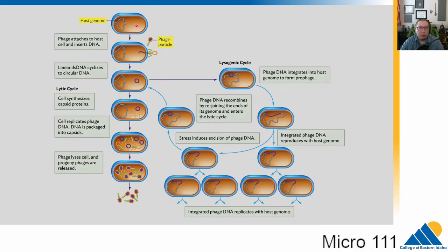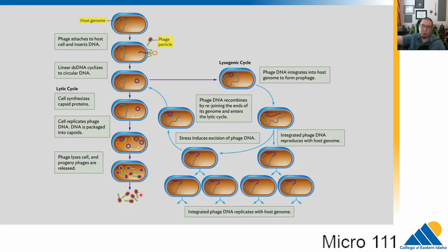Here's the host cell — it's a bacteria, here's its genome. A phage comes along and lands on the host cell. It can inject its genome in, and then this DNA can do one of two things. In the simplest phase, it can direct the construction of new phage particles. This is the lytic cycle, and once those phage particles are complete it will burst the cell and the phage particles will be released.